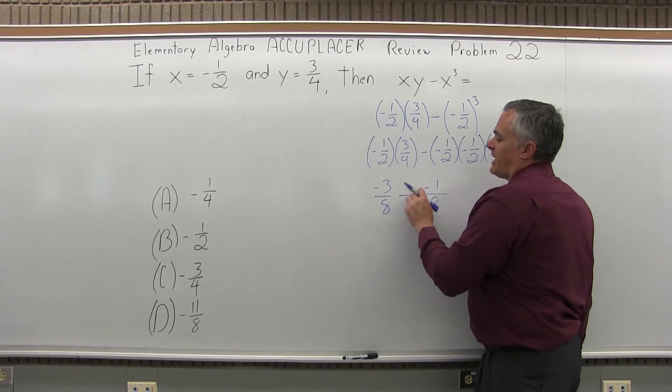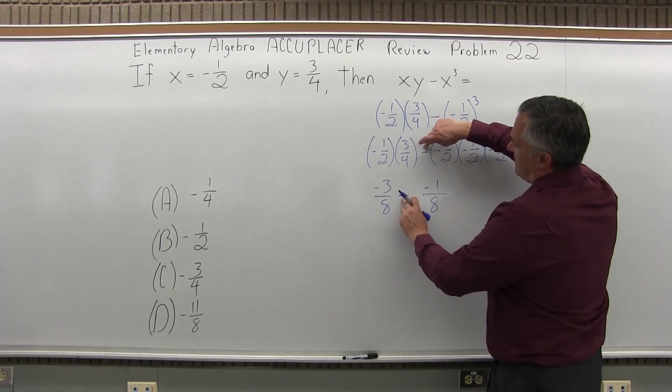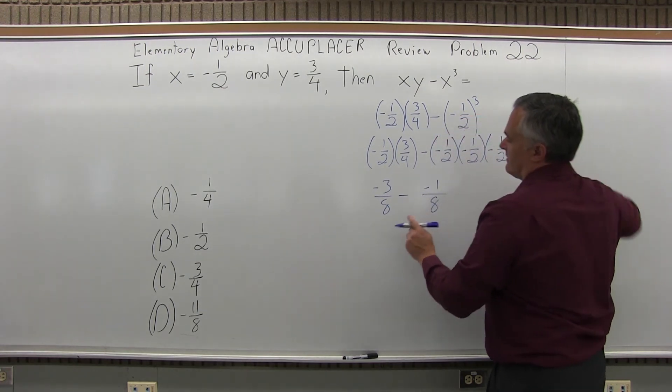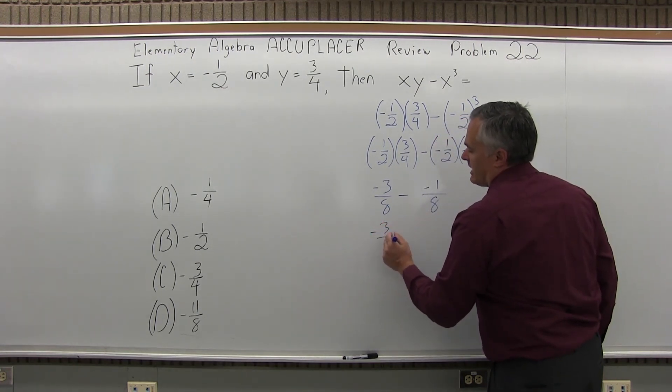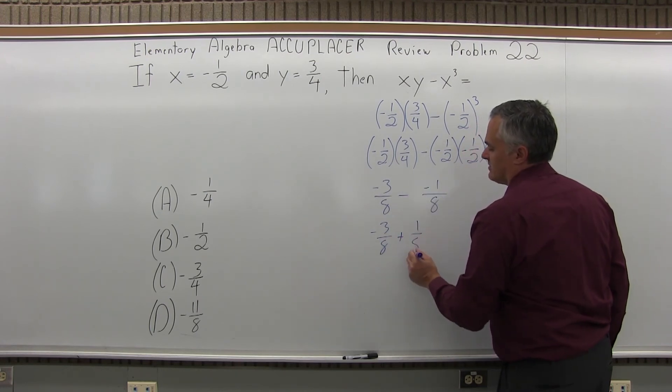So the minus and minus is going to become a plus, right. One negative is from the problem itself, and the other negative is from the multiplication of three negative things. So let me just change that right now: negative three-eighths plus one-eighth. Again the minus and minus cancels, it becomes a plus.